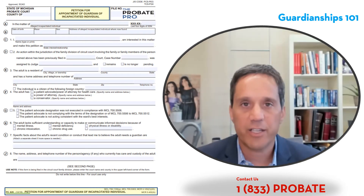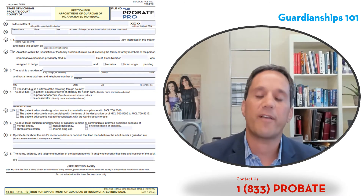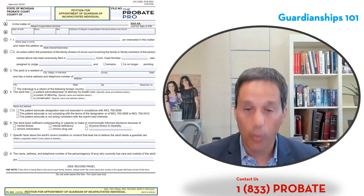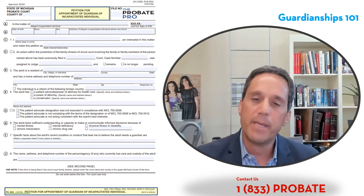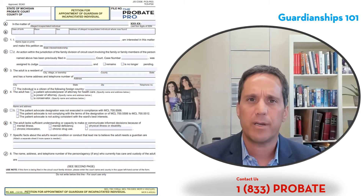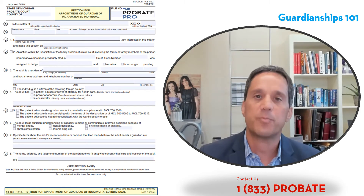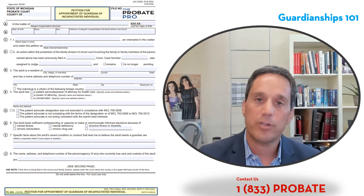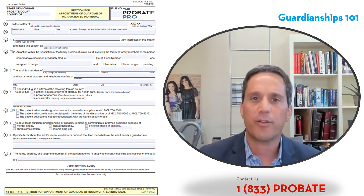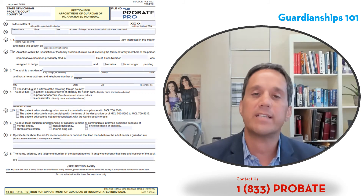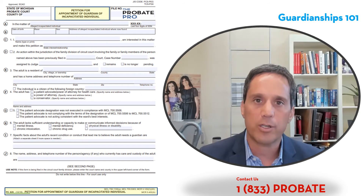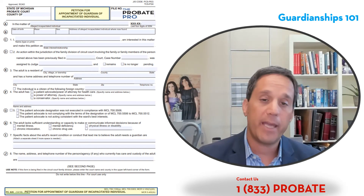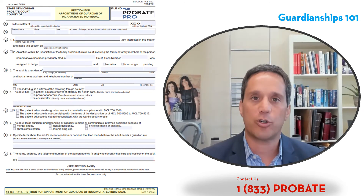To create a guardianship, you file a petition. Here it is — state court administrative order form PC 625 — that creates the beginning of this procedure. Page one is pretty basic: it asks for relevant information relating to the whereabouts of the individual, their date of birth, and identifies who the petitioner is — who is asking the court to bring forth the request for appointment of a guardian. Page two would identify who you're nominating to serve in that guardian role.